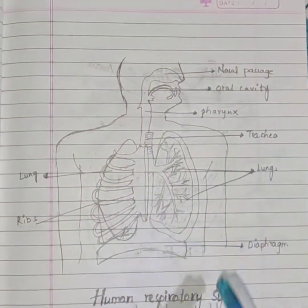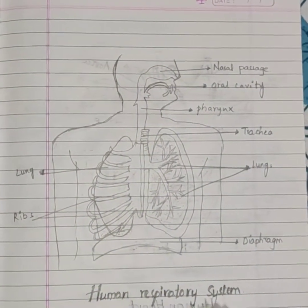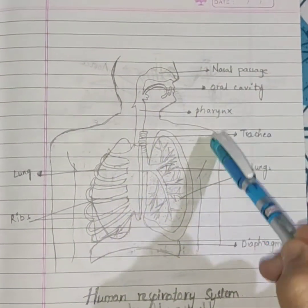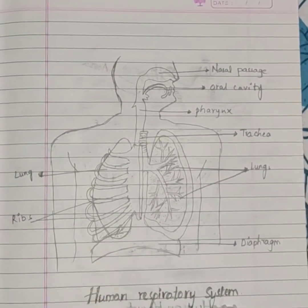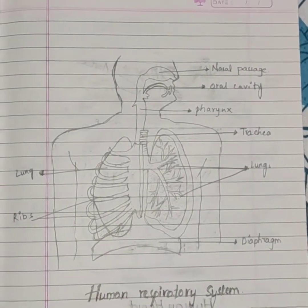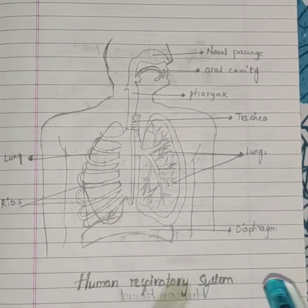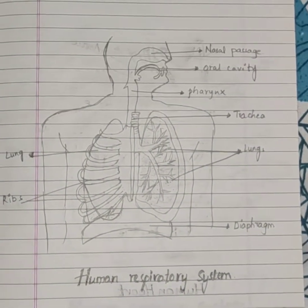This is the human respiratory system. These all are the parts involved in this human respiratory system. Now, let's move to the second diagram.